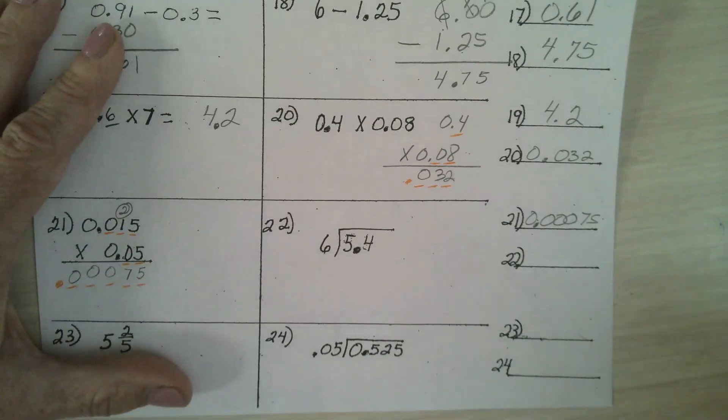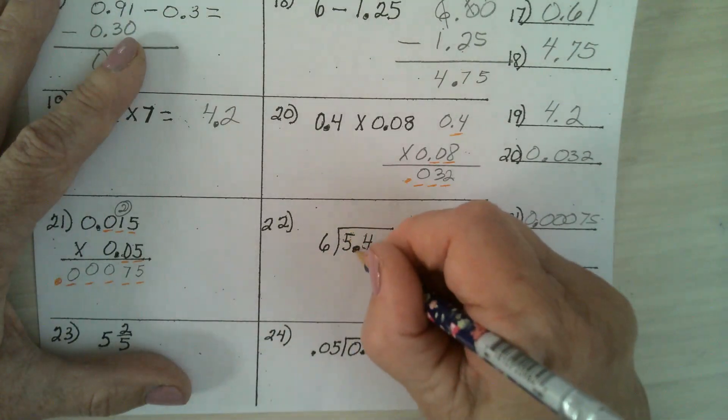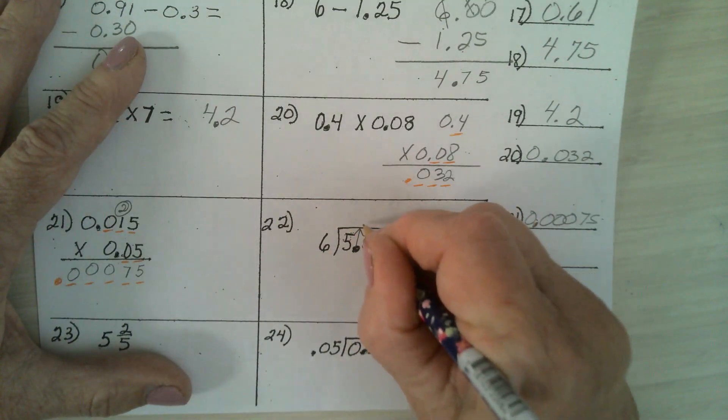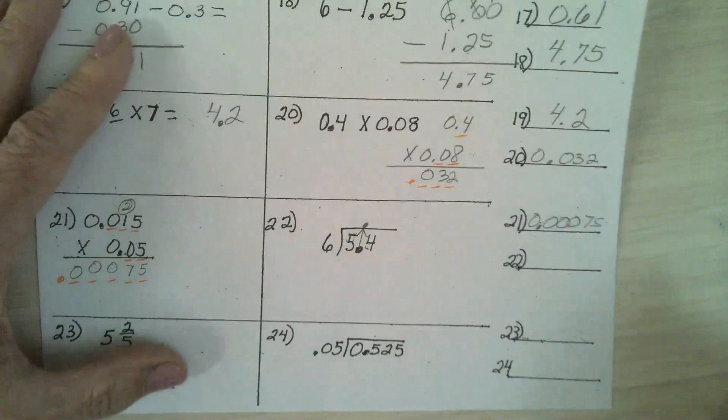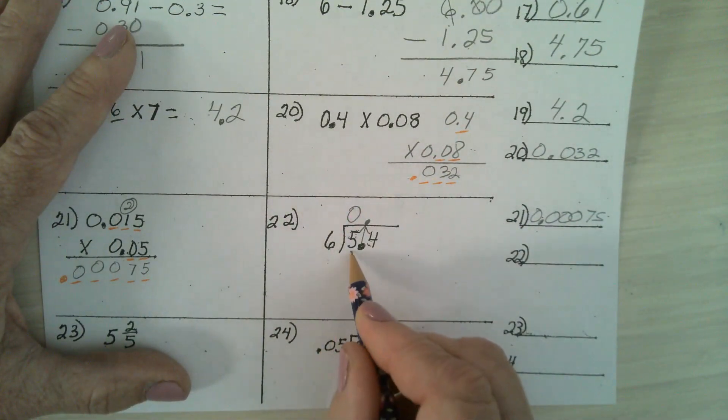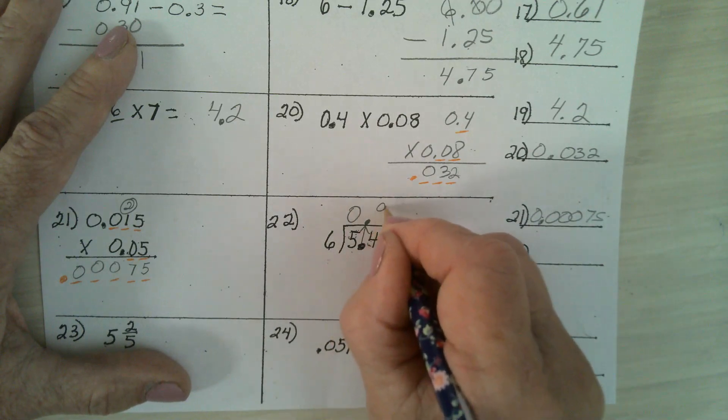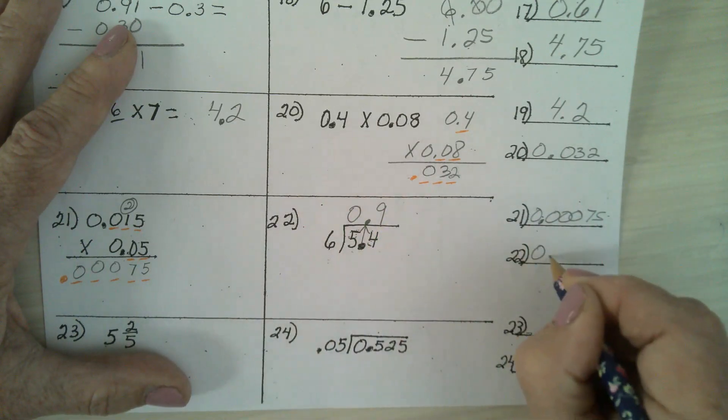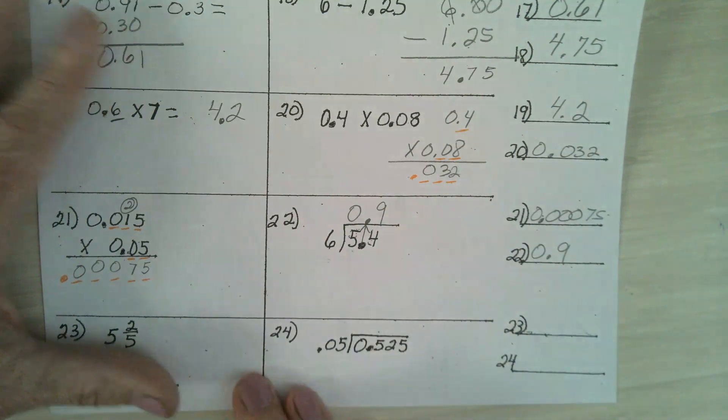In number 22, put your decimal point straight up in the quotient. How many sixes are in a 5? 0. How many sixes are in a 54? 9. It's 0.9. Any questions?